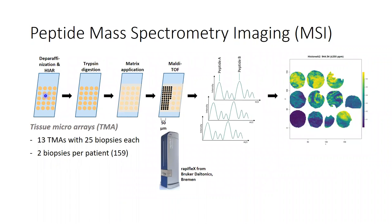We use so-called tissue microarrays, where small biopsy cores are assembled in one glass slide so that 25 to 50 samples can be processed at the same time. Using a workflow for peptide imaging, we measured 13 TMAs and got hundreds of thousands of spectra.